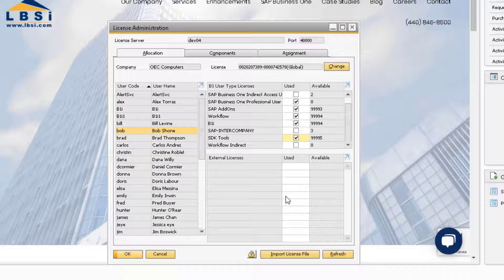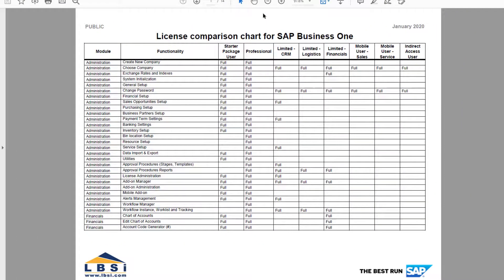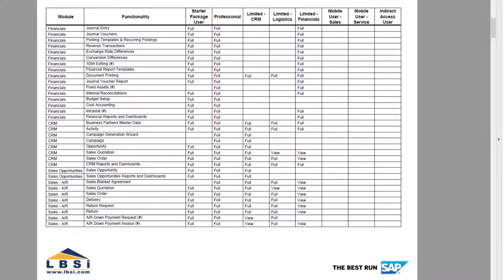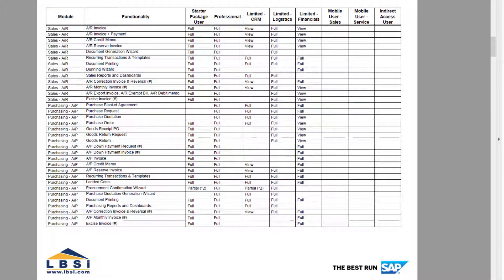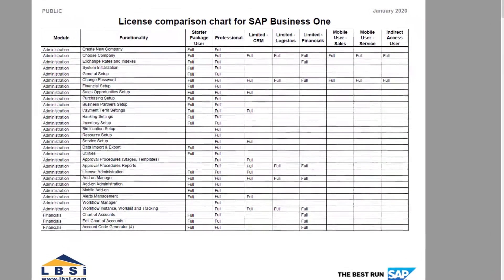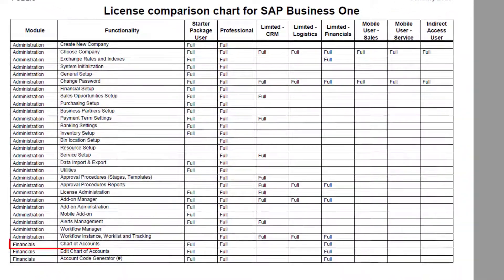To help you figure out what licenses will be necessary based on your company needs, you can use the license comparison chart. This chart shows you each of the main user licenses and the functionality that they give access to. For instance, the chart of accounts in the Financials module — if your user will need to use this function, they must be assigned either the Starter Package user, Professional, or the Limited Financials license.